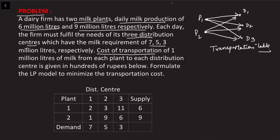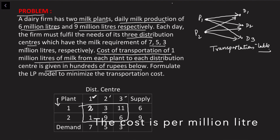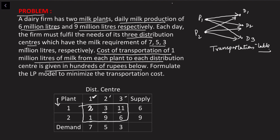The cost of transporting one million liters of milk from each plant to each distribution center is given in hundreds of rupees. The table gives us these costs: from plant 1 to distribution center 1 it costs 2, and similarly 3, 11, 1, 9, and 6 for the other routes. We need to formulate the LP model to minimize transportation cost. First, we decide on the decision variables.